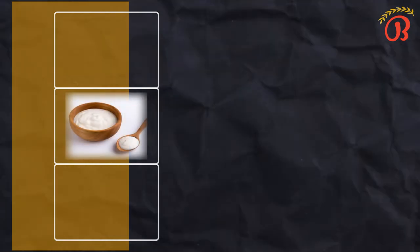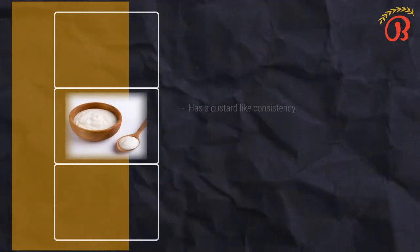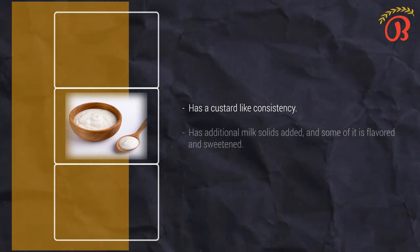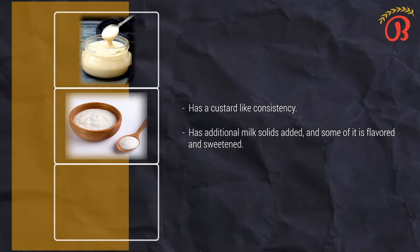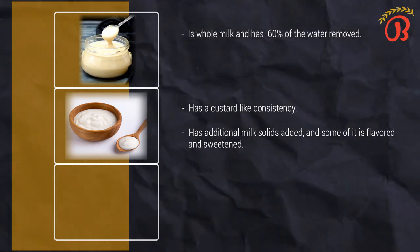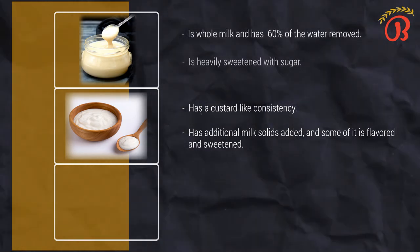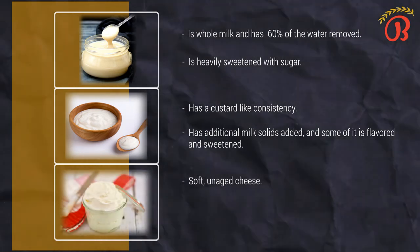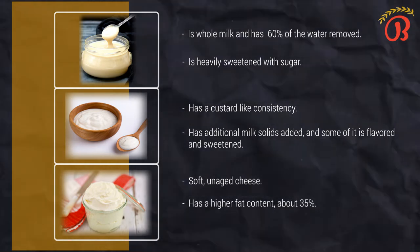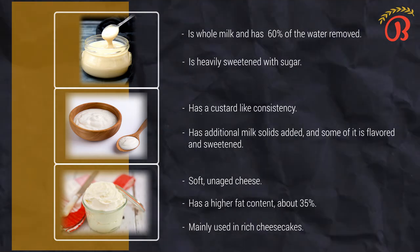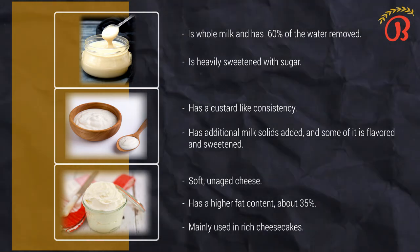Yogurt is milk cultured by special bacteria. It has a custard-like consistency. Most yogurt has additional milk solids added, and some of it is flavored and sweetened. Next is condensed milk. Condensed milk is whole milk that has had about 60% of water removed and is heavily sweetened with sugar. Cream cheese is also a soft, unaged cheese but it has a high fat content — about 35%. It is used mainly in rich cheesecakes and in a few specific products.